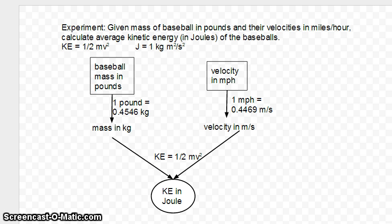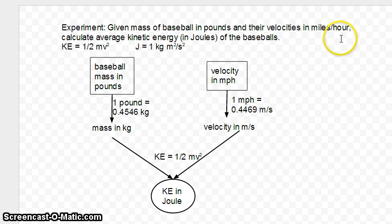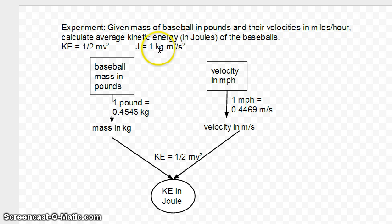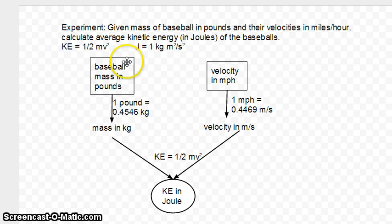You're going to have to do these calculation plans for pre-labs. Here's an example of one complete plan — you would build this. In this case we're given the mass of some baseballs in pounds and their velocities in miles per hour, and we're asked to calculate the average kinetic energy in joules of those thrown baseballs. Kinetic energy is: take the mass of the object and multiply by the square of the velocity. We want it in joules. I put kinetic energy in joules as my final point, and the raw data — baseball mass in pounds and velocity in miles per hour — are the starting squares.